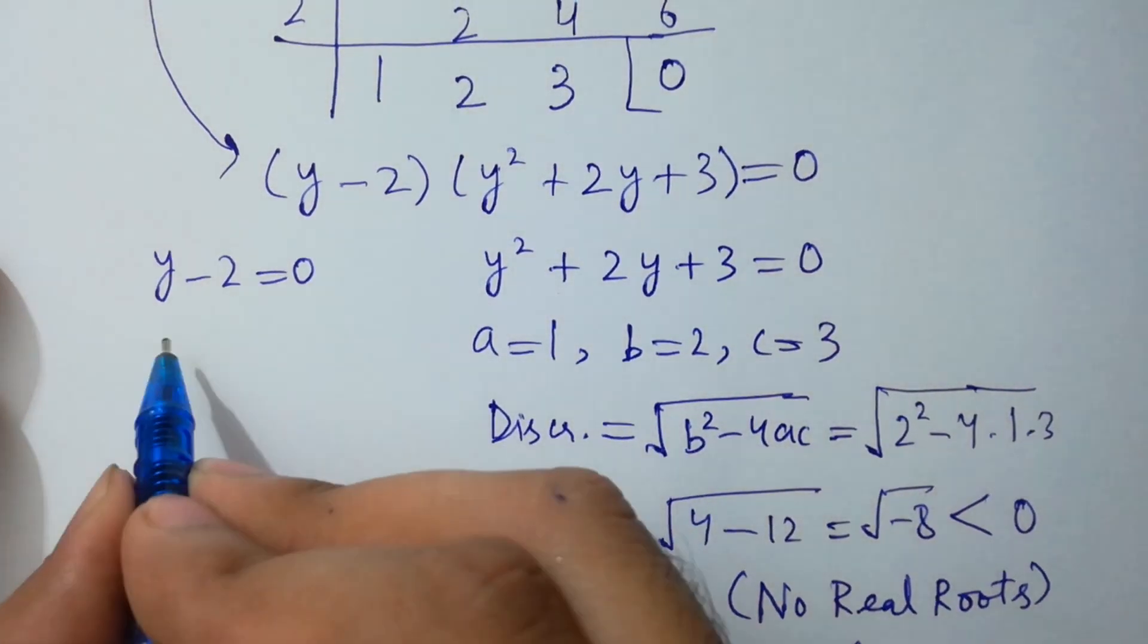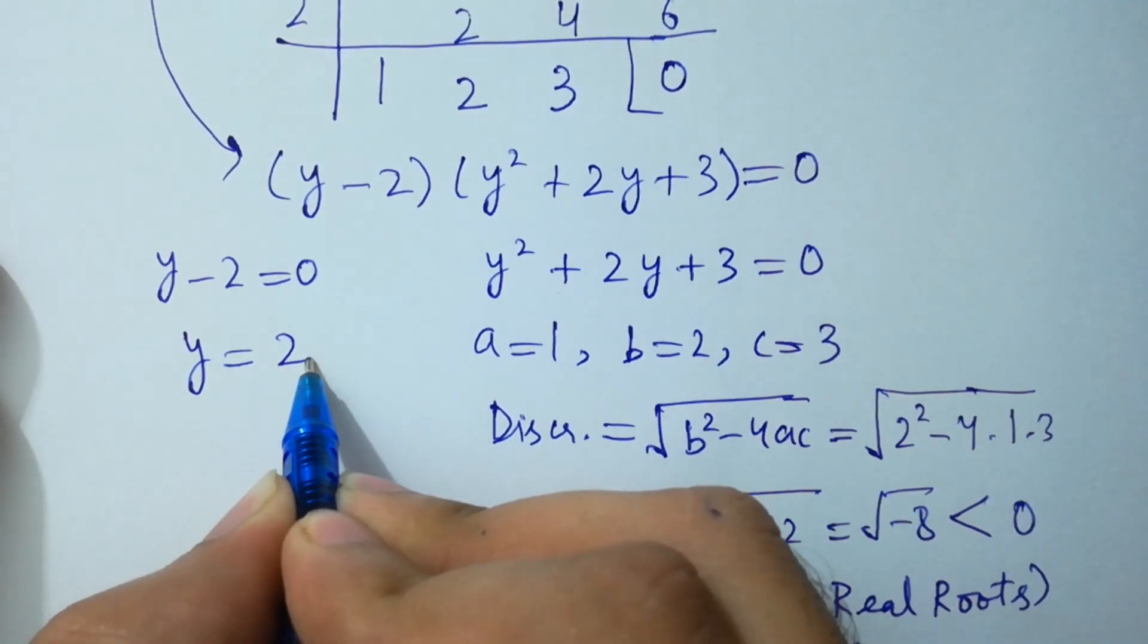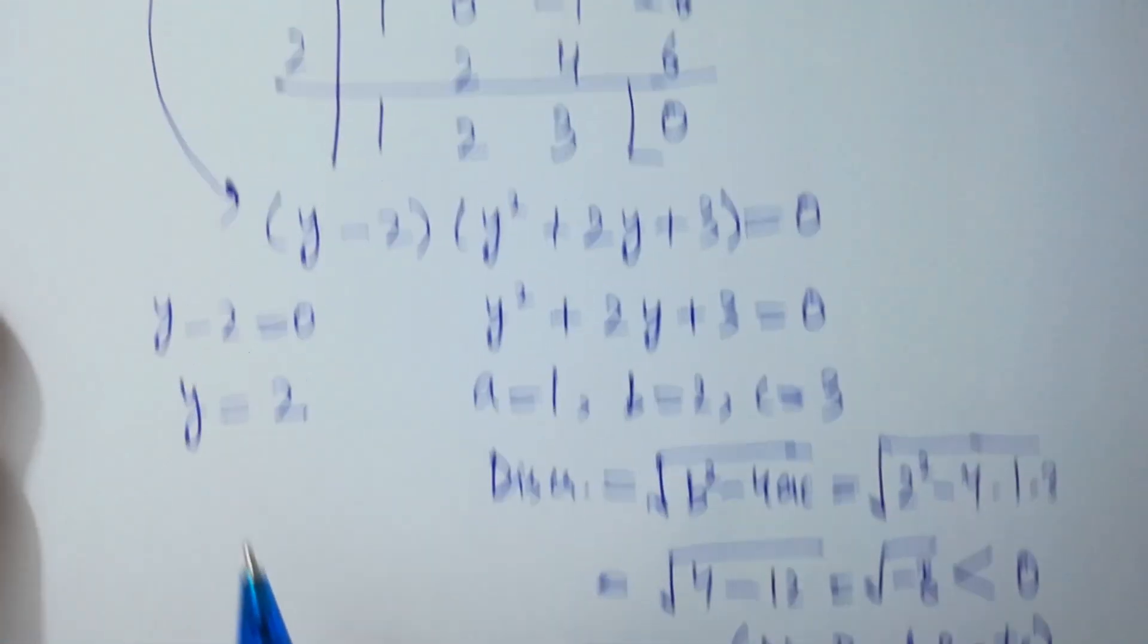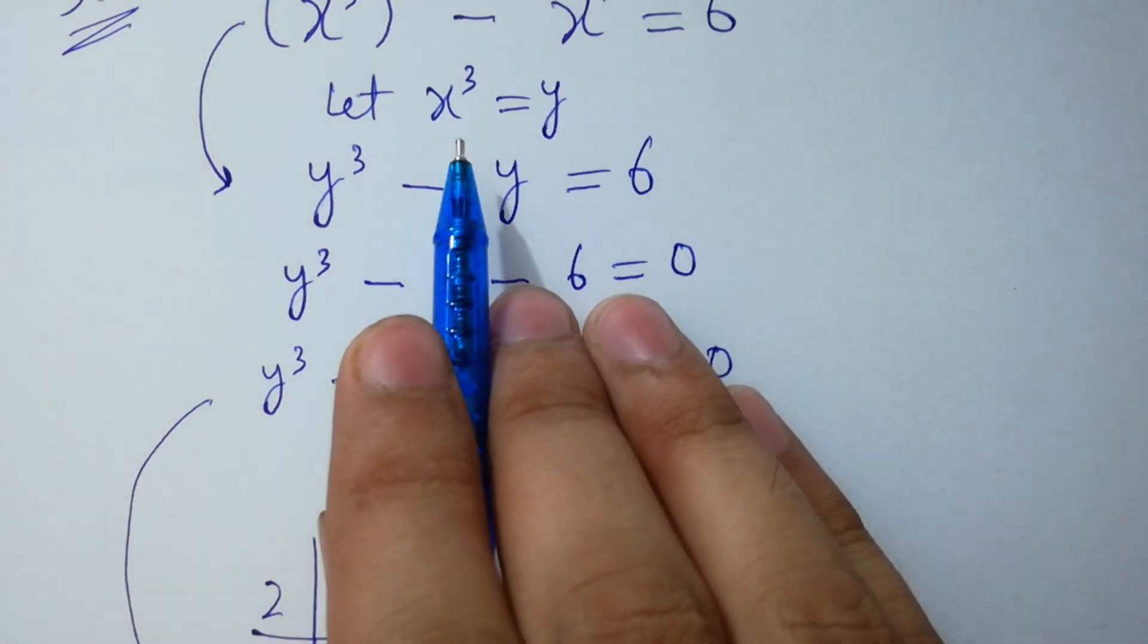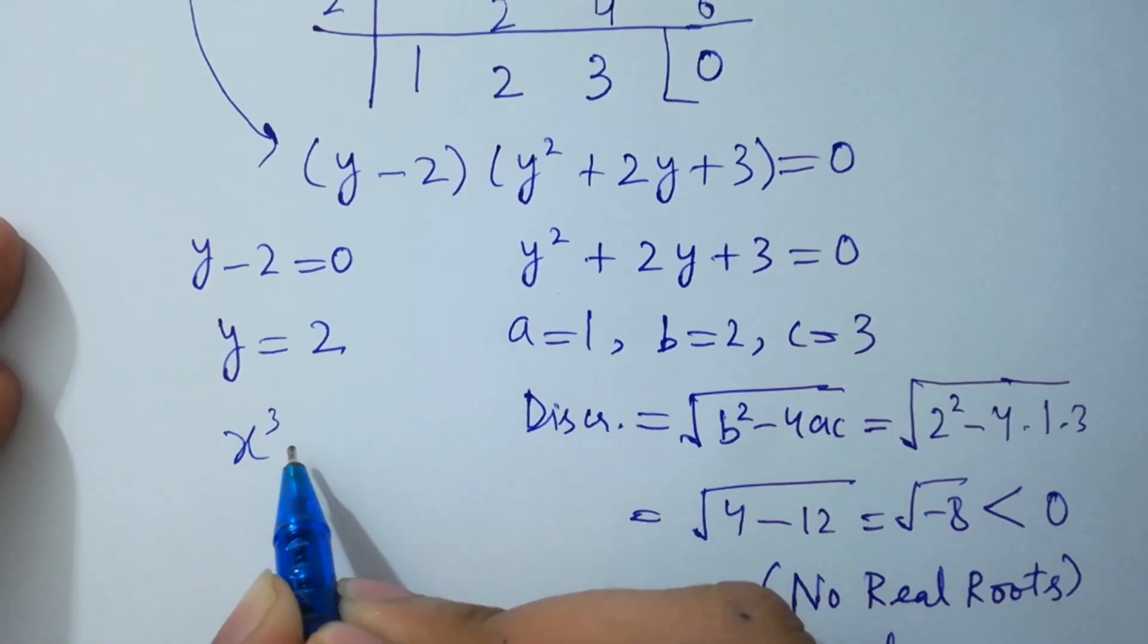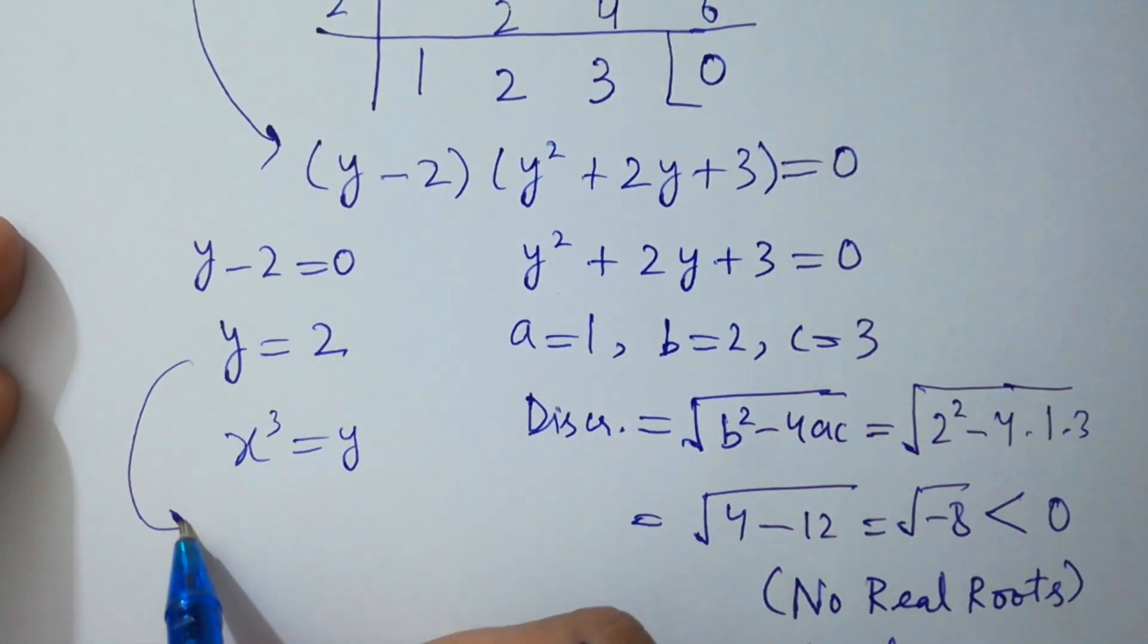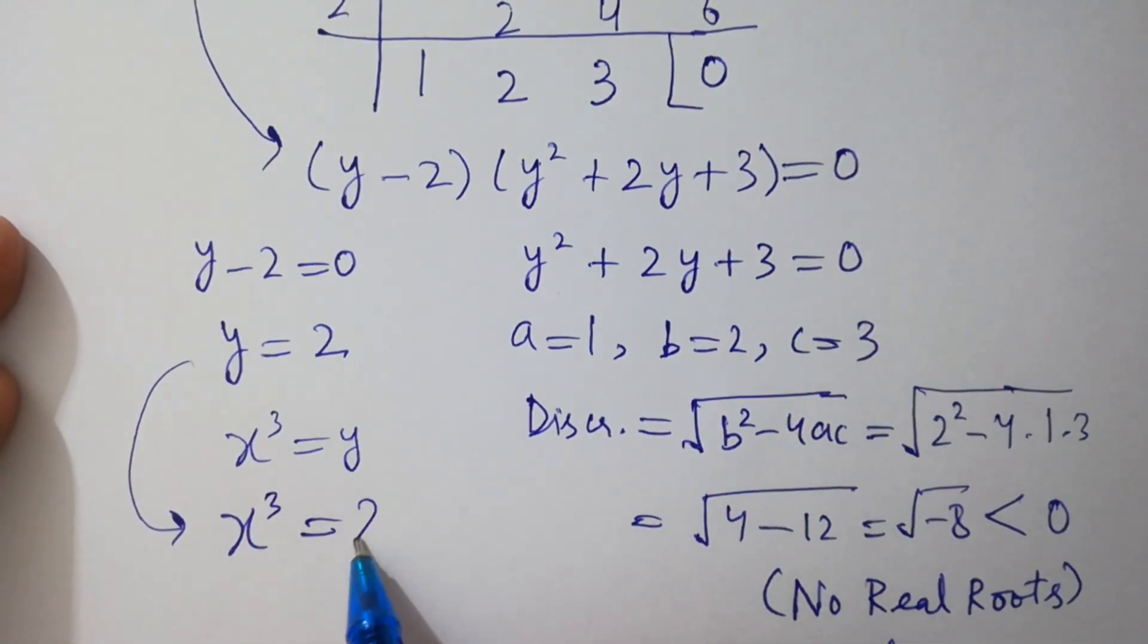So here, y minus 2 is equal to 0, y equal to 2. Since we let x cube equal to y, x cube equal to y, x cube equal to 2.